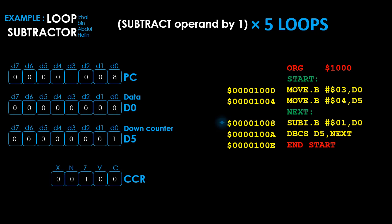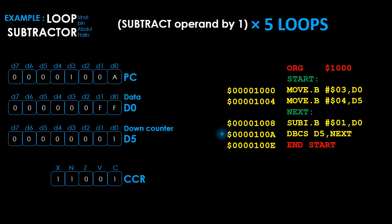The program counter is now pointing back at address 1008. The instruction at 1008 is executed — it subtracts 1 from D0 and stores the value FF back in D0. The status register is updated to 11001, because the subtraction resulted in a negative number requiring a borrow. When the DBCS instruction is executed, it checks the C flag. Its value is 1, signaling that a branch is not to be taken. Therefore, the program does not branch — it simply ends.